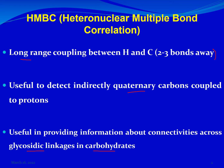We may also have adducts, dimers, or even trimers in natural product chemistry. To determine connectivities between two monomers of a trimer or two parts of an adduct, HMBC is very useful.